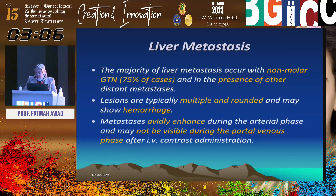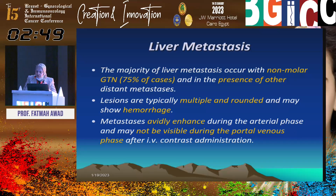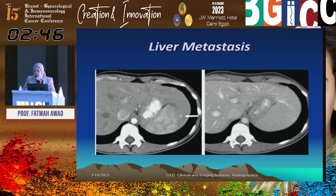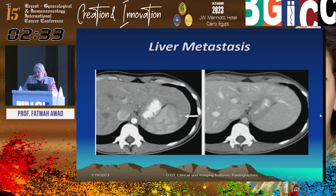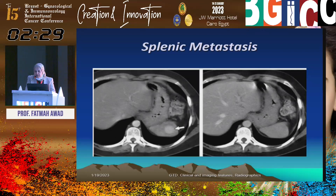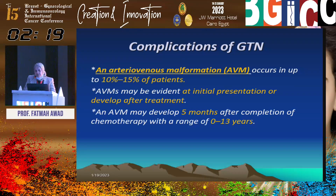Liver metastases occur in 75% of cases after non-molar pregnancy. They are multiple or single and avidly enhancing, but importantly, a tri-phase CT scan is required. Detection must be in the arterial phase — not the portal venous phase — because these lesions show rapid washout due to their high vascularity. Splenic metastases behave similarly, seen in the arterial phase with washout in the portal venous phase. Therefore, tri-phase CT with careful arterial phase review is essential.